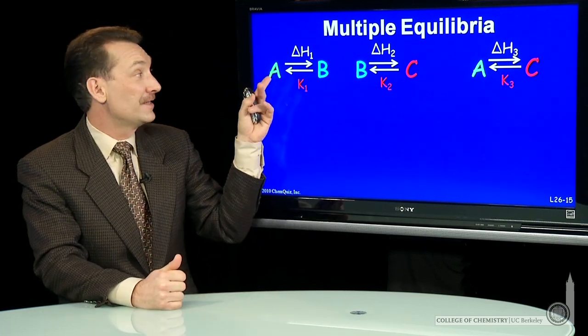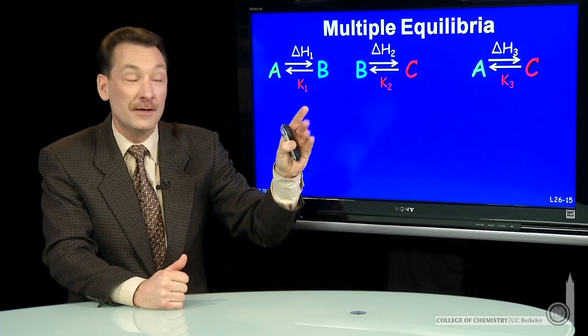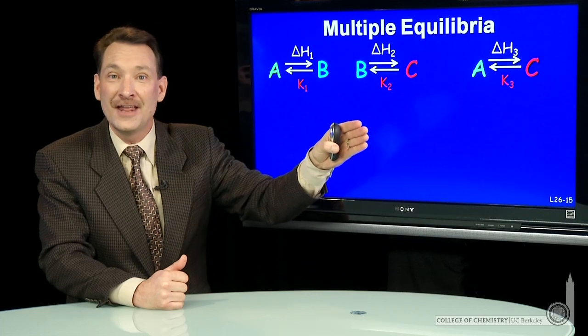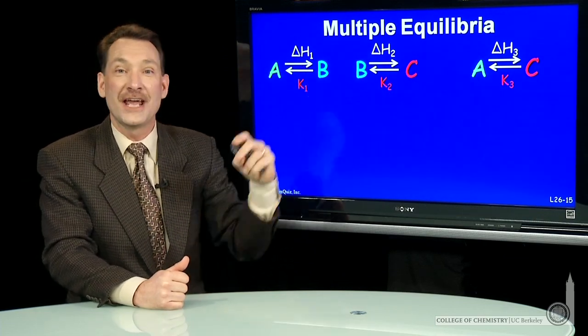We already know since this reaction 3 is the sum of reaction 1 and reaction 2, we would add the enthalpies. Delta H3 is delta H1 plus delta H2.